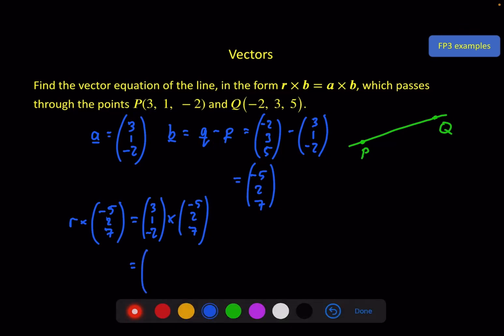And if you've got two vectors where you actually know the numbers, I would recommend you go ahead and do that cross product. So the top element, 7 minus -4, then -10 minus 21, and 6 minus -5. And there we go.